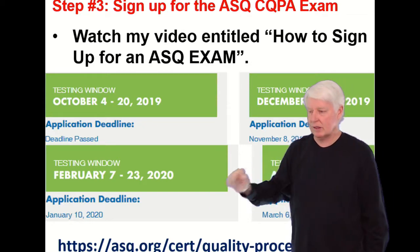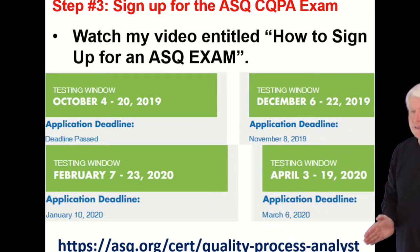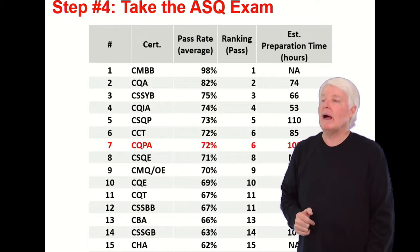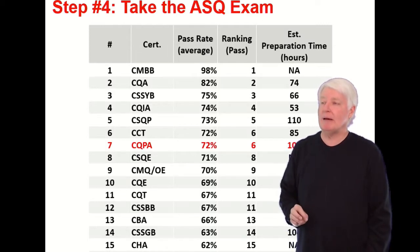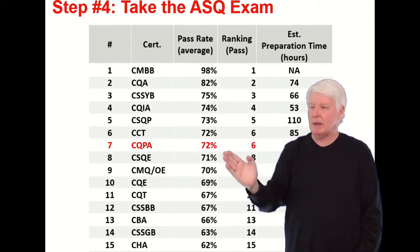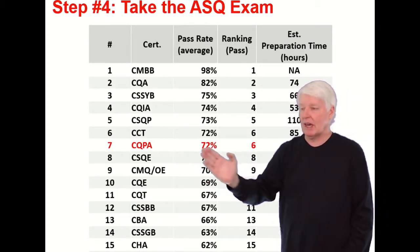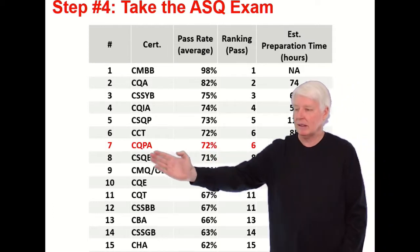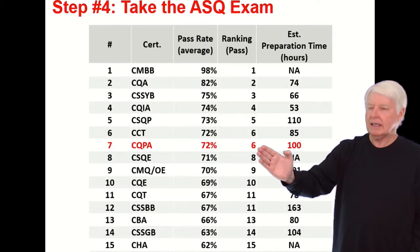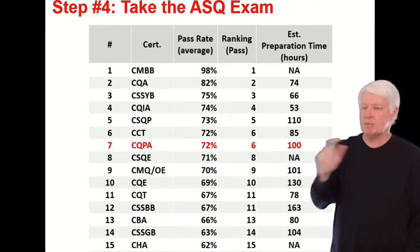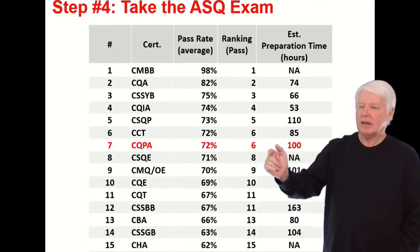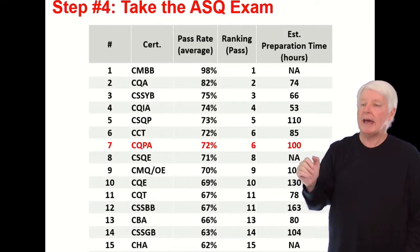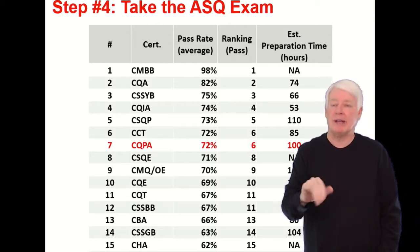That should answer all your questions. This is where you'll find the latest dates — at the ASQ website. What's the probability of passing the exam? Looking at the whole population, it's 72%. My class achieves more in the 90s, so we have an excellent class. The CQPA at 72% is tied for sixth highest pass rate among ASQ's 18 certifications. It's still a challenging exam — don't get me wrong — but there are definitely more challenging ones.